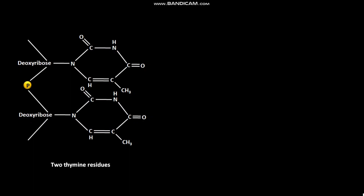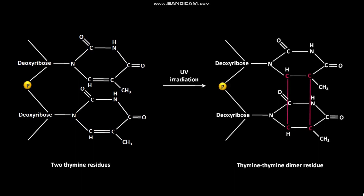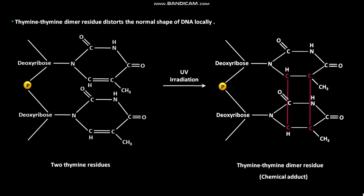These are two thiamine residues in a normal DNA molecule. Whenever these two thiamine residues come in contact with UV light, they form a thiamine thiamine dimer residue. This thiamine thiamine dimer residue is called a chemical adduct. Thiamine thiamine dimer residue distorts the normal shape of DNA locally.